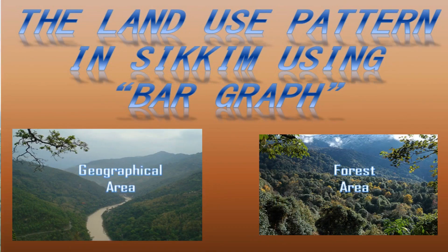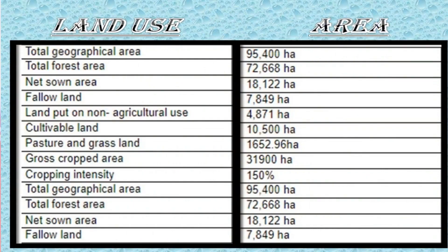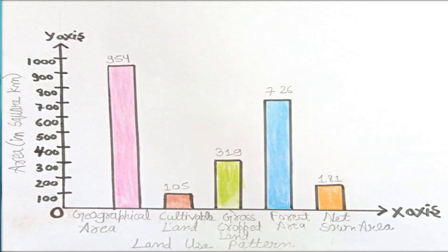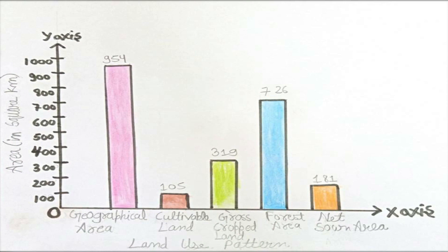Let us see the land use pattern in Sikkim using a bar graph. Given the land use in Sikkim and the area covered by them, draw the x-axis and y-axis. Name the x-axis as land use pattern in Sikkim and name the y-axis as area in square kilometers. Take a suitable scale and mark the area in square kilometers on the y-axis. Now, according to the data given, locate the bar.